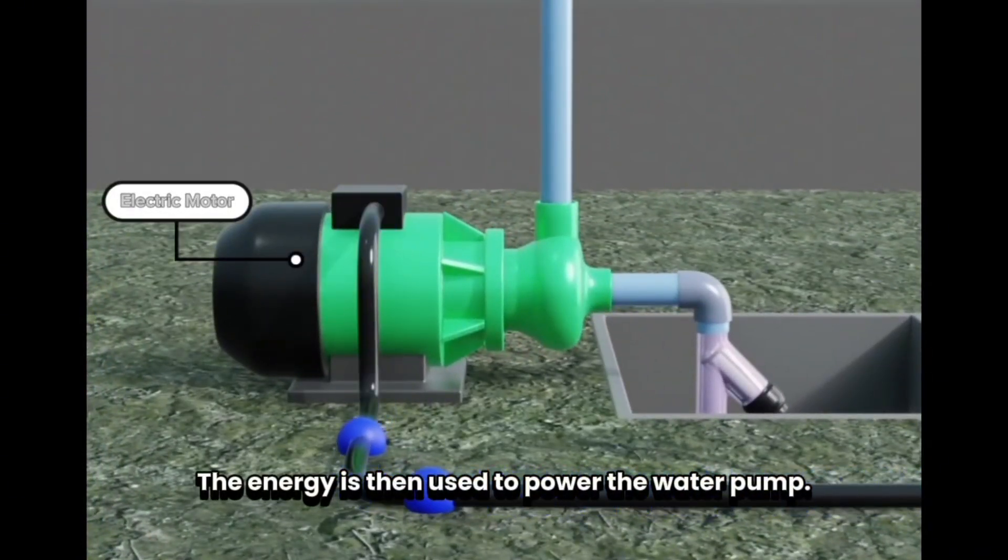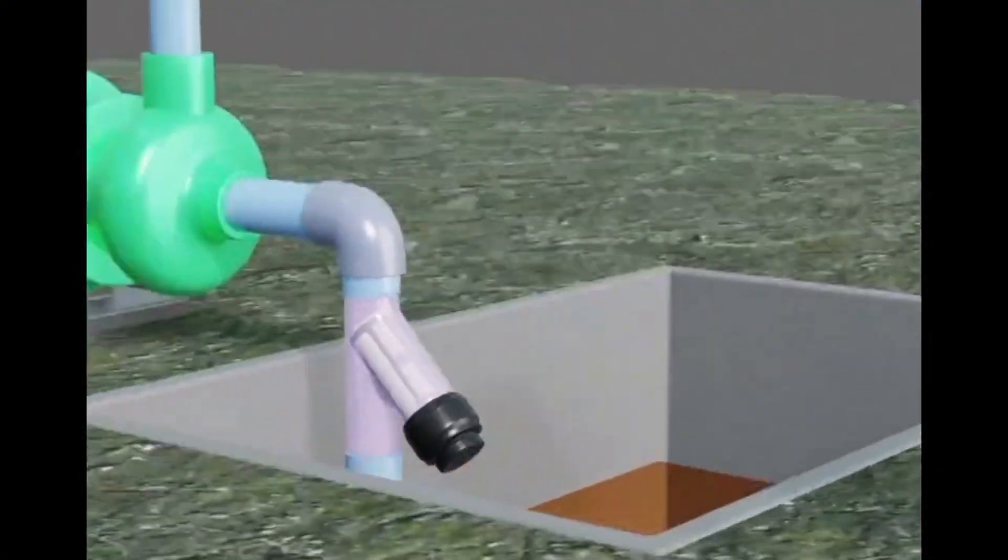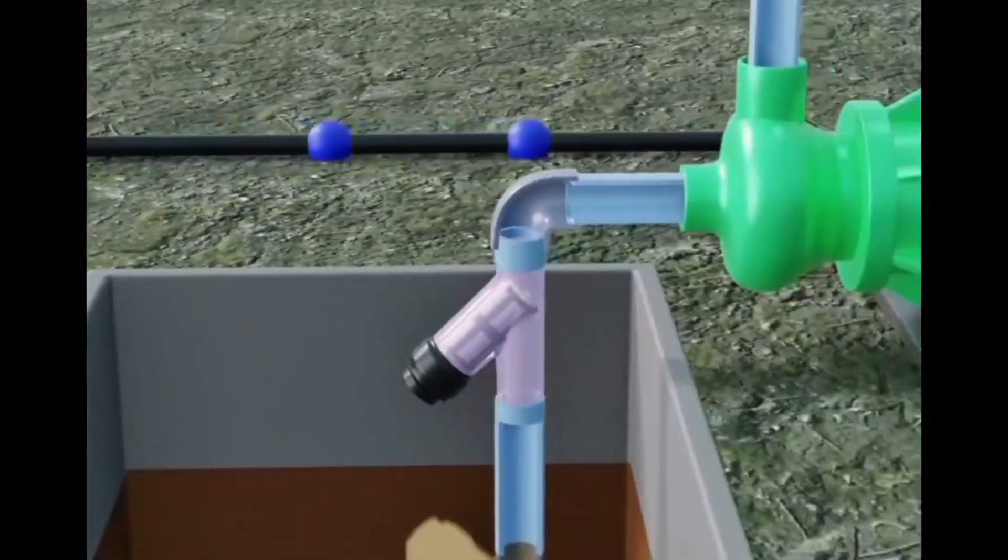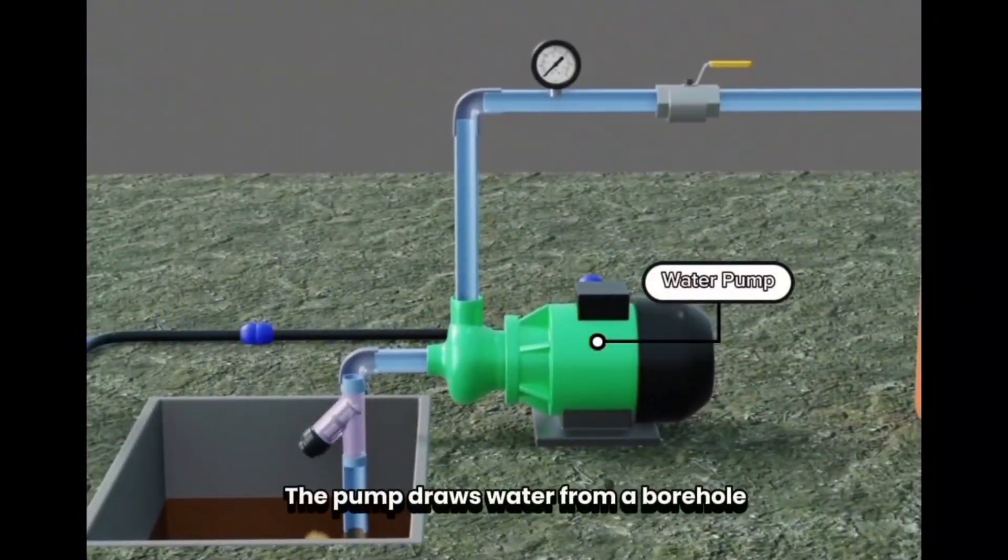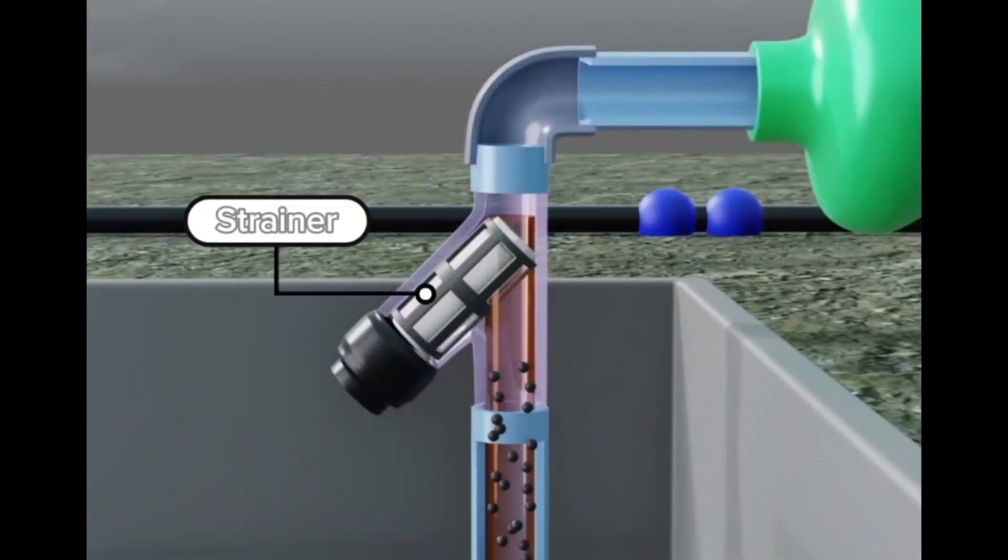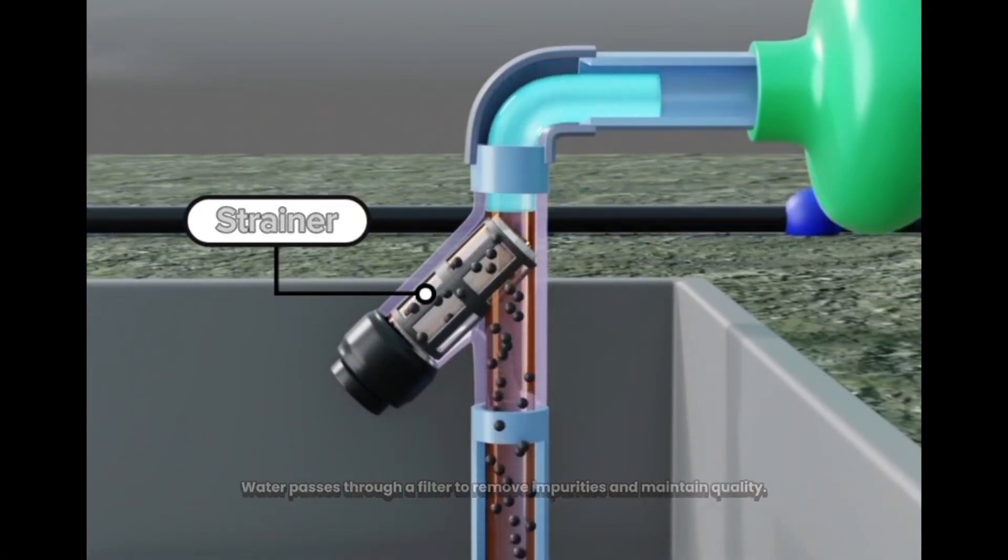The energy is then used to power the water pump. The pump draws water from a borehole. Water passes through a filter to remove impurities and maintain quality.